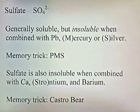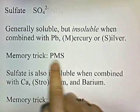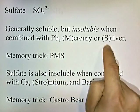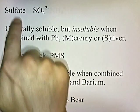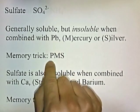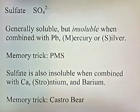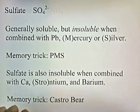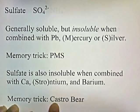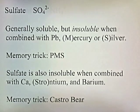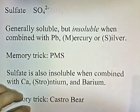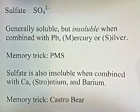Sulfate ion is generally soluble, but it's insoluble when combined with lead, mercury, or silver. The memory trick for this exception is PMS: Pb for lead, M for mercury, and S for silver. Sulfate is also insoluble when combined with calcium, strontium, and barium. The memory trick is Castro-Bear: CA for calcium, stro for strontium, bare for barium. I got that off YouTube from a very clever student — if you can think of better memory tricks, I encourage you to use them.